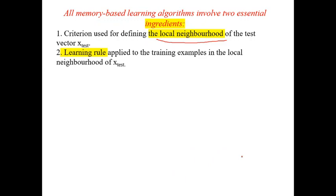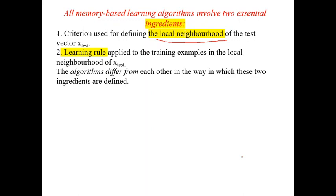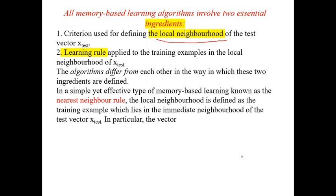And the learning rule. On what learning rule we are applying to train our model. These two are the conditions for memory-based learning algorithm. One is local neighborhood condition, and second one is learning rule. The algorithms differ based upon these two conditions only. Different algorithms use different learning rules or different conditions for local neighborhood rules.